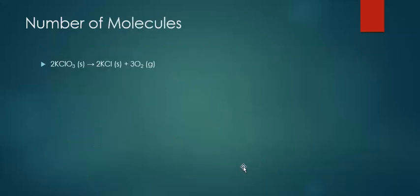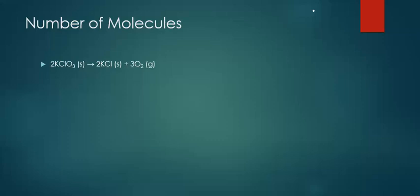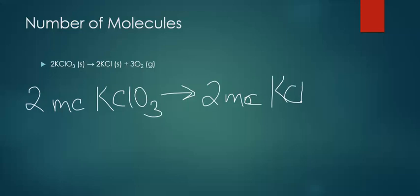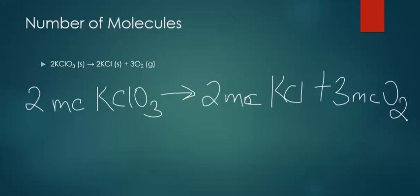Number of molecules. When you look at a balanced chemical reaction, it tells us the number of molecules. We're starting with two molecules of KClO₃ and forming two molecules of KCl and three molecules of oxygen. To get the number of molecules, we simply look at the coefficients from the balanced chemical equation.